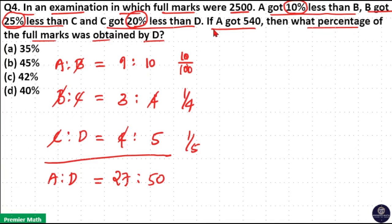Now, you already know A got 540 marks, that is 27 part here is 540. 27 into 20 is 540. Then D's mark will be 50 into 20, which is equal to 1000. So D's mark is 1000.